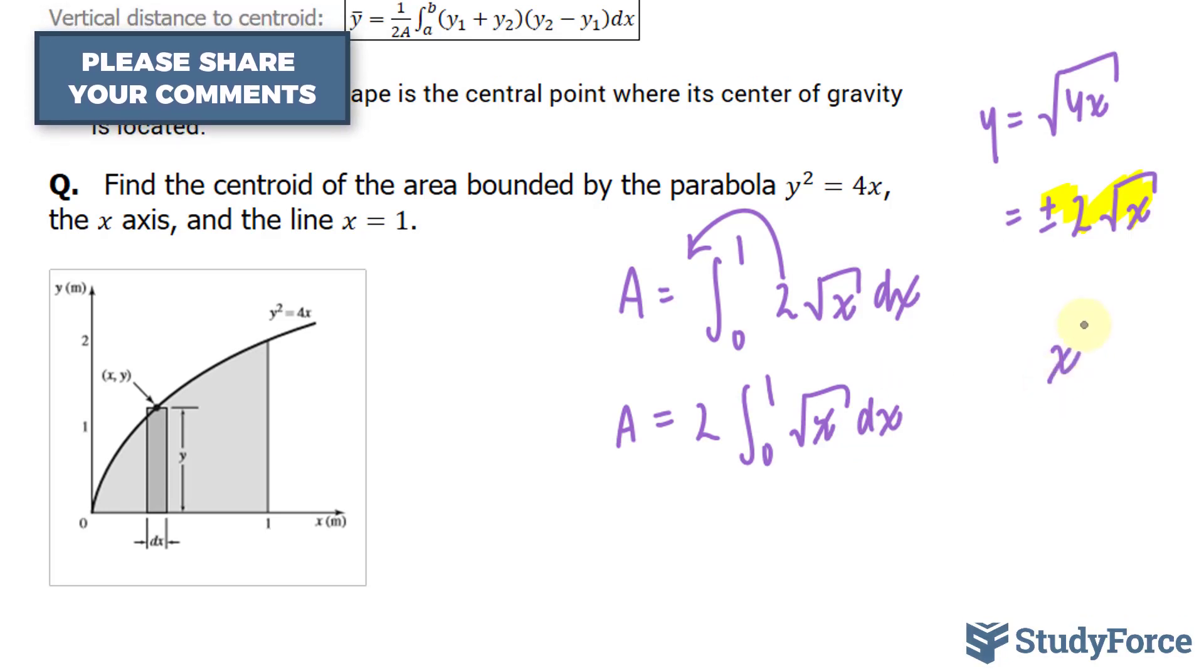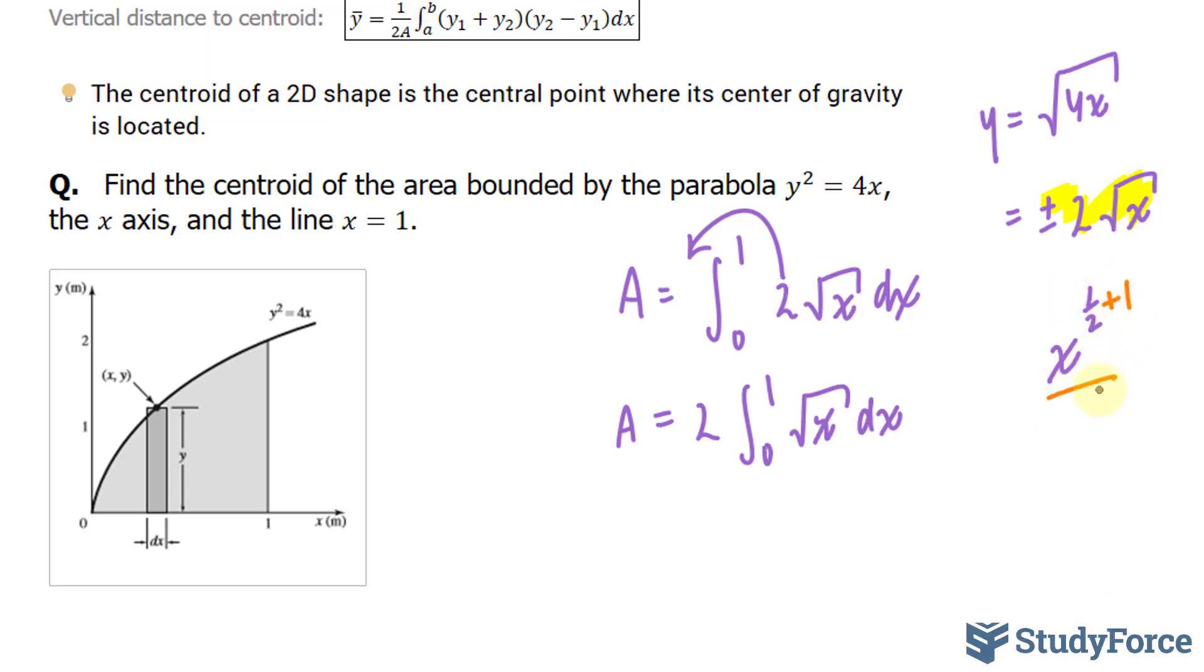That's not hard to do. We write it out as an exponent, and then we add 1. Take the sum of this, which is 3 over 2, and divide it by that. That gives us 2x to the power of 1.5, or 3 over 2 over 3.